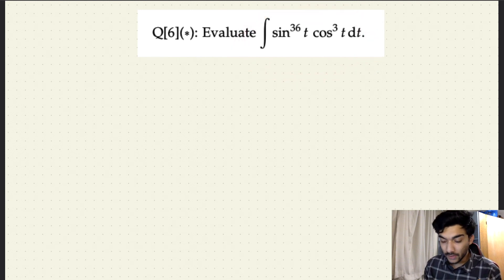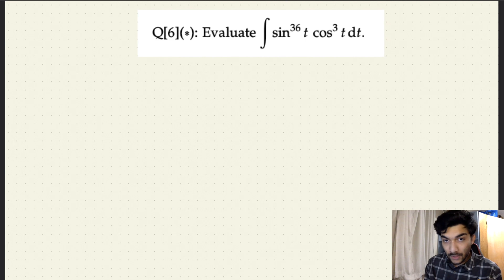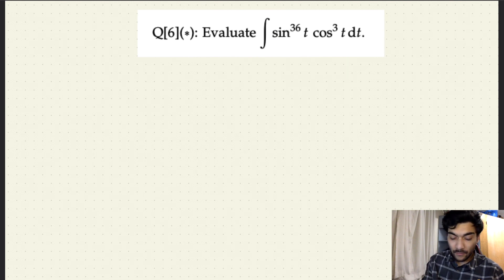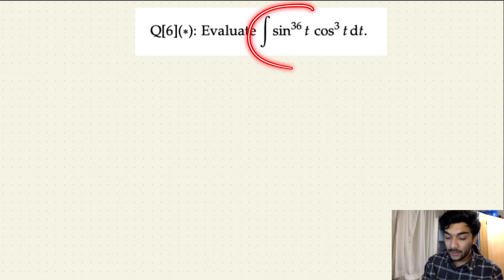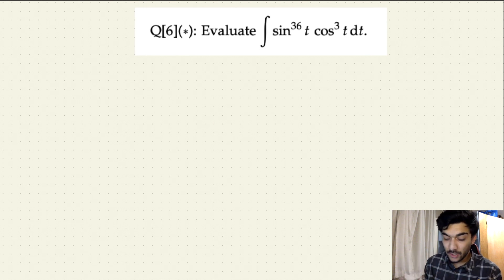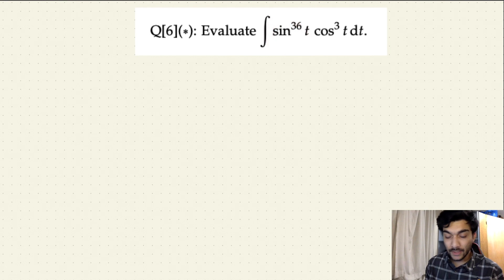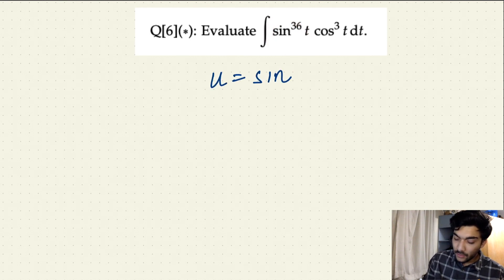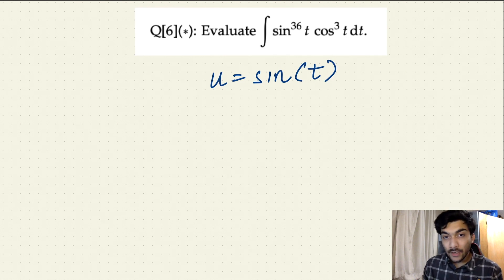Whenever you have a combination of sine and cosine functions where one part has an even power — like sine to the power 36t — and one part has an odd power — like cosine cube t — you always pick the u function to be the one with the even power. So in this case, since sine t has the even power of 36, we assume u to be sine t. That is the trick.